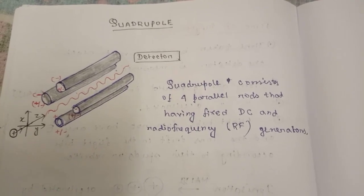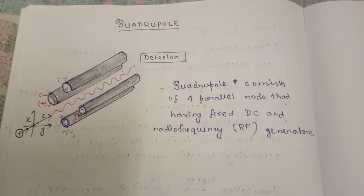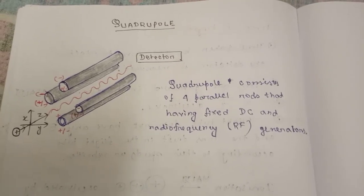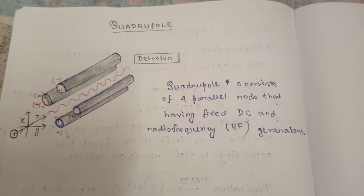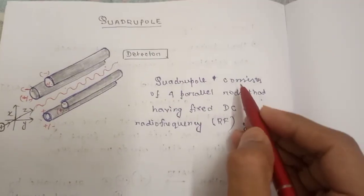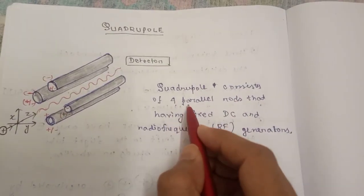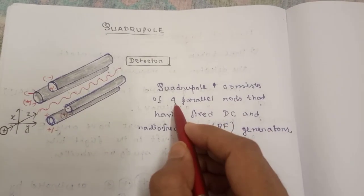In my previous videos you have watched other mass analyzers. Now what is quadrupole? The name suggests that it consists of four parallel rods. Four, that's why quadrupole.